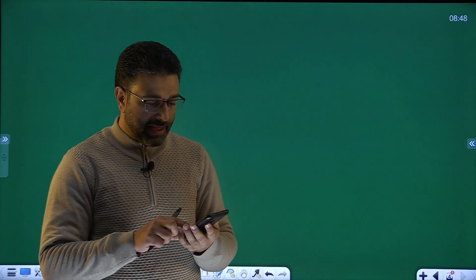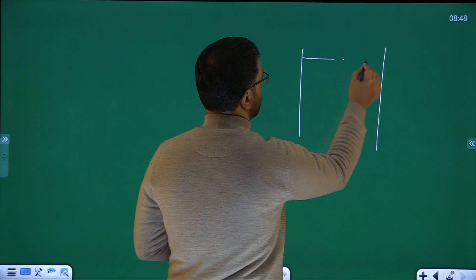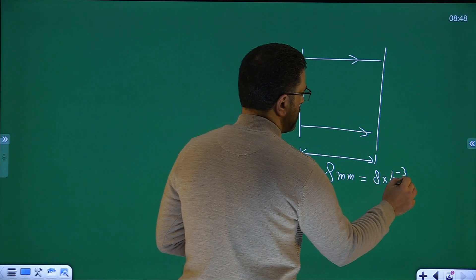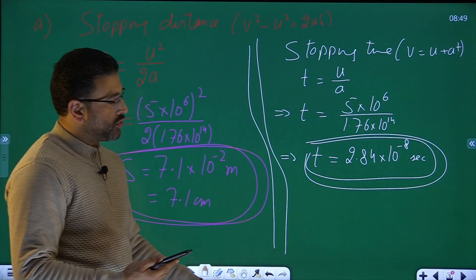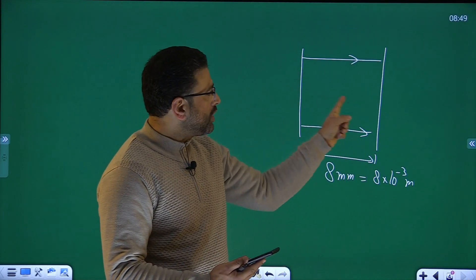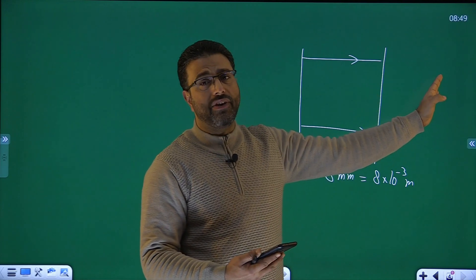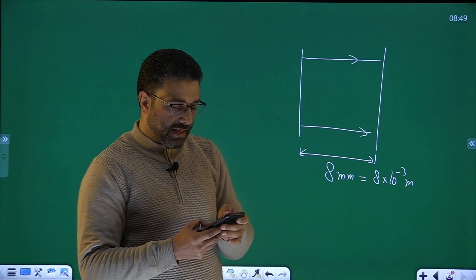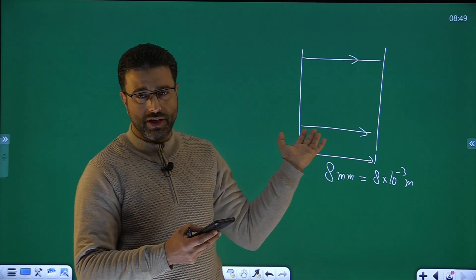Now there is also a third part. Part C: if the region containing the electric field is 8 millimeters long — that is 8 into 10 to the power minus 3 meters — remember the stopping distance was 7.1 centimeters. So obviously, if the electric field region is only 8 mm, the electron will not stop within it because 8 mm is much smaller than 7.1 centimeters. So the electron will continue moving through and beyond the field region, after which there is no electric field and no electric force, so it will continue at constant speed.